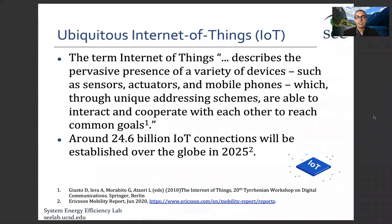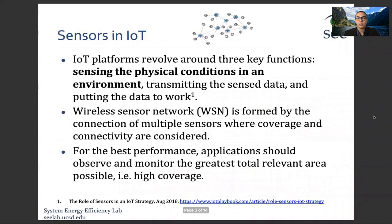Let's start by defining Internet of Things. It describes the pervasive presence of a variety of devices which are connected to each other to reach common goals. By 2025, it's expected that around 25 billion IoT connections will be established. Sensors play a crucial role in Internet of Things, where they sense the physical condition in an environment.